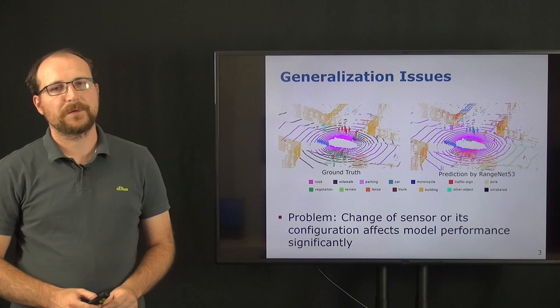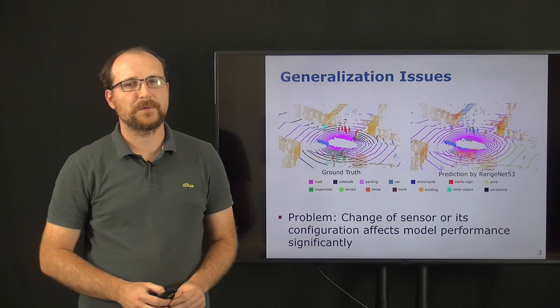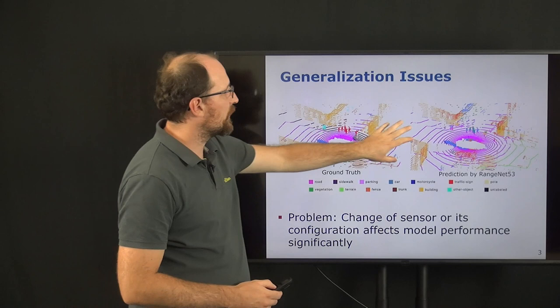Here shown is an example where we trained a model on a 64-beam LiDAR sensor, namely the KITTI dataset, and transfer it to the NuScenes data. And using this we can now see the following,